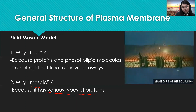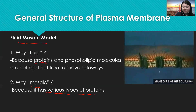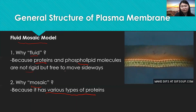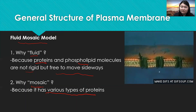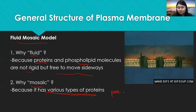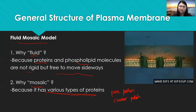Now let's look at the general structure of plasma membrane. The plasma membrane is called the fluid mosaic model. Why is it called fluid? Because the protein and phospholipid inside the plasma membrane are not rigid but free to move sideways. Why is it mosaic? Because it has various types of protein found in the plasma membrane — for example, pore protein, carrier protein, and many more.